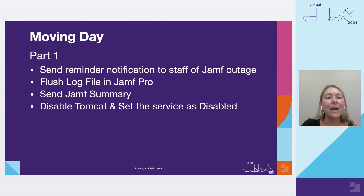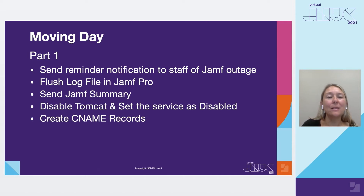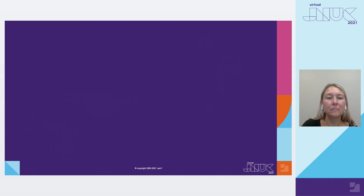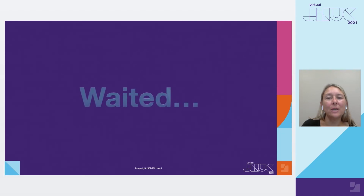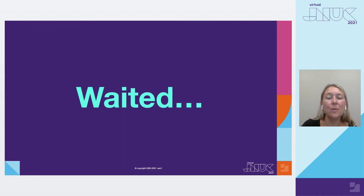I then disabled Tomcat on our three web app nodes and set the service to disabled instead of automatic startup, just in case one of our servers was accidentally restarted by another member of my team. Our network admin then added the CNAME records for our new instance given to us by our engineer. Then it was time to back up the database and upload it to a Jamf Dropbox. Our engineer received the database backup and sent it to the cloud team, and we waited for them to do their magic.